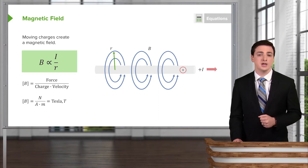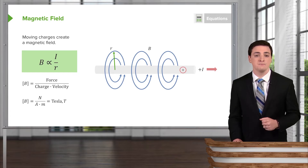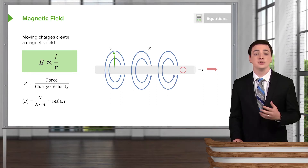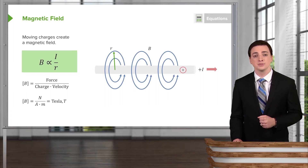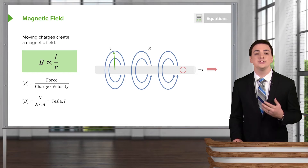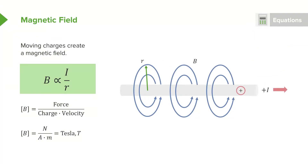The units of the magnetic field are force per charge times velocity, or newtons per amp times meters. We call these units teslas, and we symbolize this with the letter T.